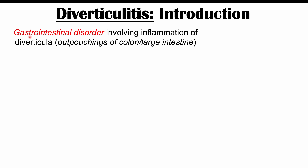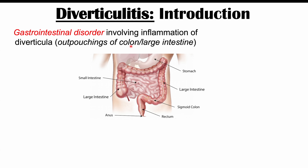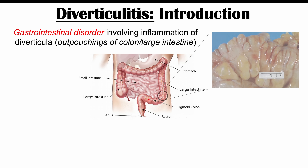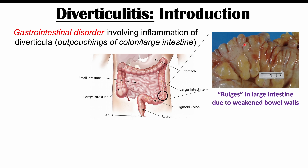Diverticulitis is a gastrointestinal disorder involving inflammation of diverticula — this is why we call it diverticulitis. Diverticula are outpouchings of the colon or large intestine. Looking at this diagram, here is the large intestine, and this is where these outpouchings occur. If we zoom in on a section of the large intestine, we can see these little bulges. These outpouches or bulges are due to weakened bowel walls.